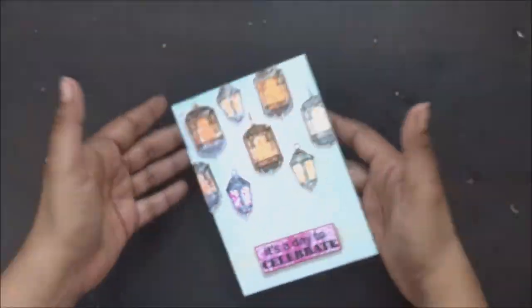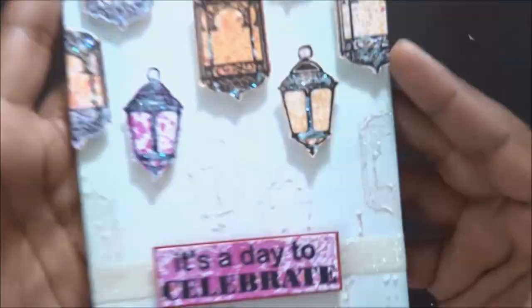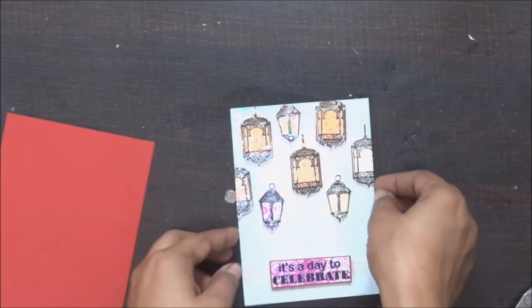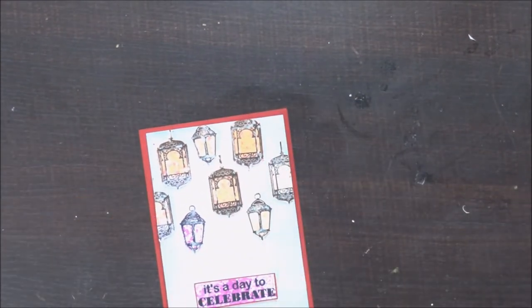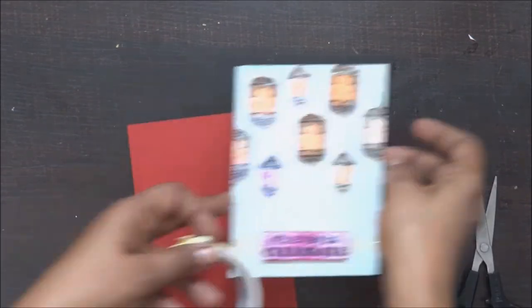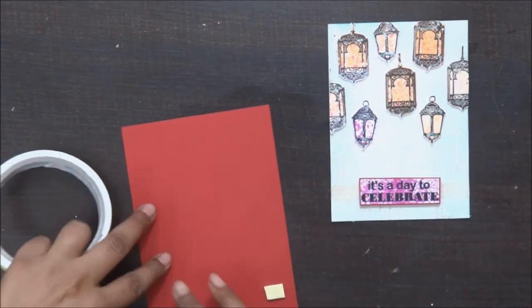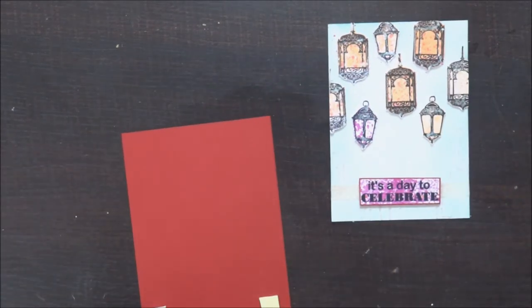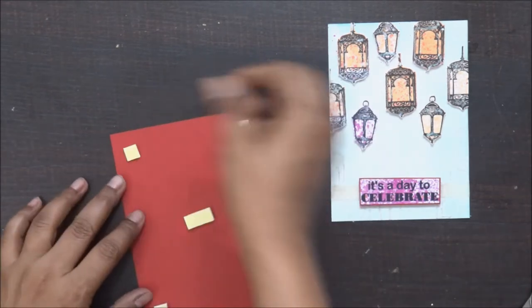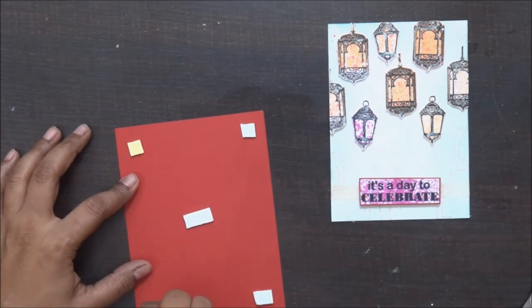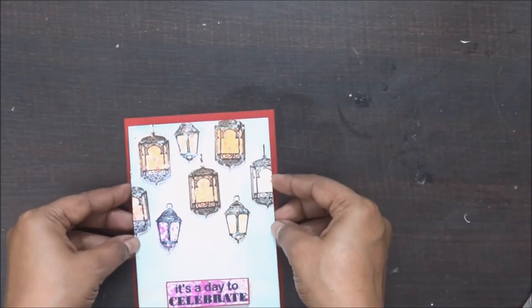So once my card base is ready, now I'm going to finalize and stick it on my red cardstock. Again for this I'm using my foam tape to stick it. Like I said, I really like giving dimensions to my cards, to my layouts, to my sentiments. It is really a good way of highlighting your work.